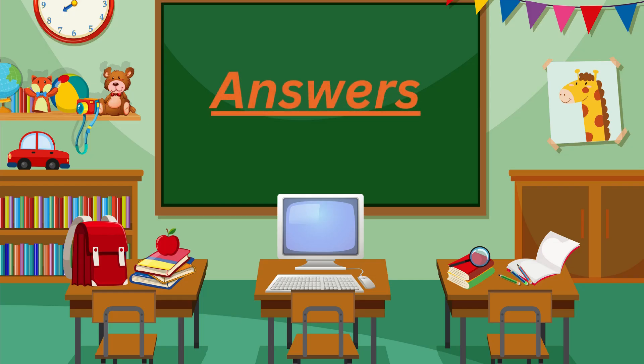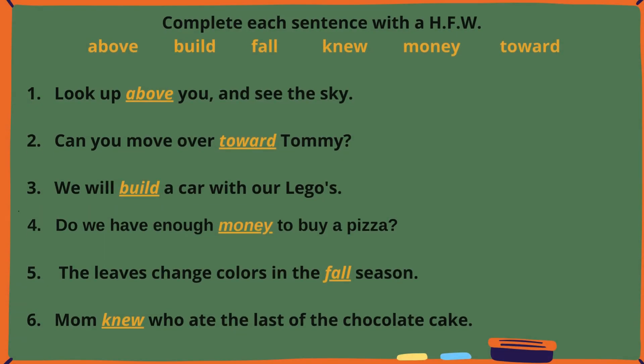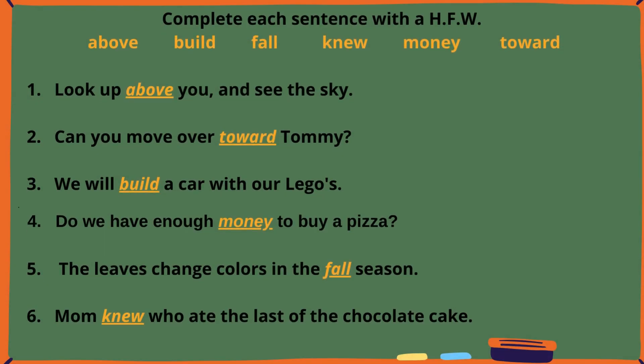Now it's time to reveal the answers to the fill-in-the-blanks and see how you did. I know you did a great job, so let's check and see who got them all correct. Sentence 1: Look up above you and see the sky. Sentence 2: Can you move over toward Tommy? Sentence 3: We will build a car with our Legos. Sentence 4: Do we have enough money to buy a pizza? Sentence 5: The leaves change colors in the fall season. Sentence 6: Mom knew who ate the last of the chocolate cake.